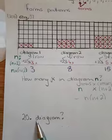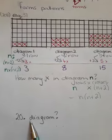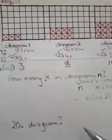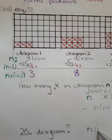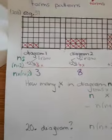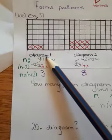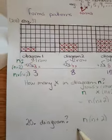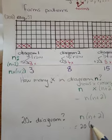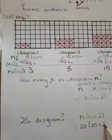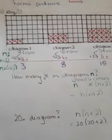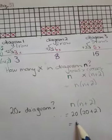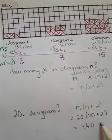We can now work out the number of crosses in any diagram. For the nth diagram, the formula is N times (N plus 2). To find the 20th diagram, N equals 20, so we calculate 20 times (20 plus 2), which is 20 times 22, giving us 440 crosses.